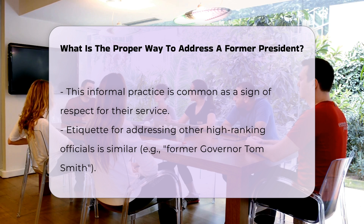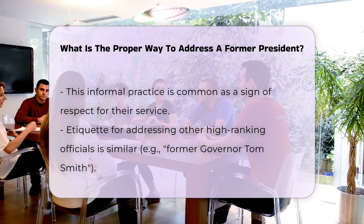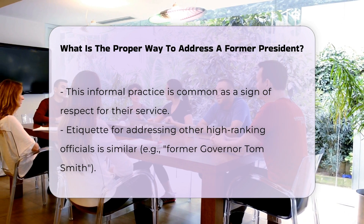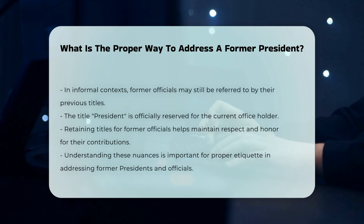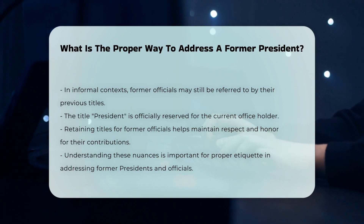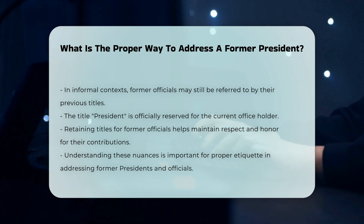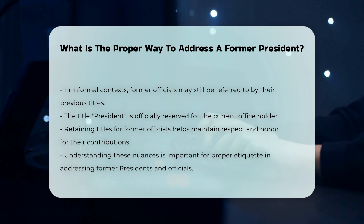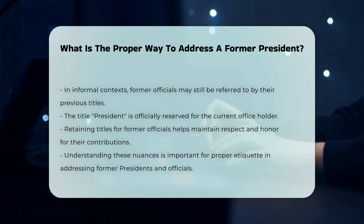Consistency with other officials: This etiquette extends to other high-ranking officials as well. For example, a former governor would be introduced as former governor Tom Smith, but in informal settings, they might still be referred to by their former title. It's important to note that the title president is officially reserved for the current officeholder. However, the tradition of retaining titles for former officials is a way to maintain respect and honor for their contributions to public service.